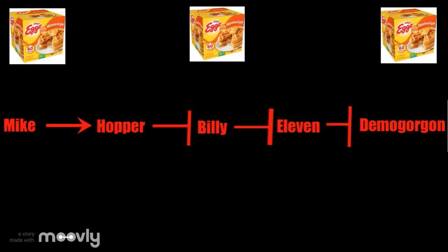Using this pathway we can see what would happen if mutations occur. What would happen if there is no Mike? If there is no Mike, the demogorgon would not be defeated, because Mike cannot activate Hopper, so Billy would not be repressed and 11 would not be able to defeat the demogorgon.